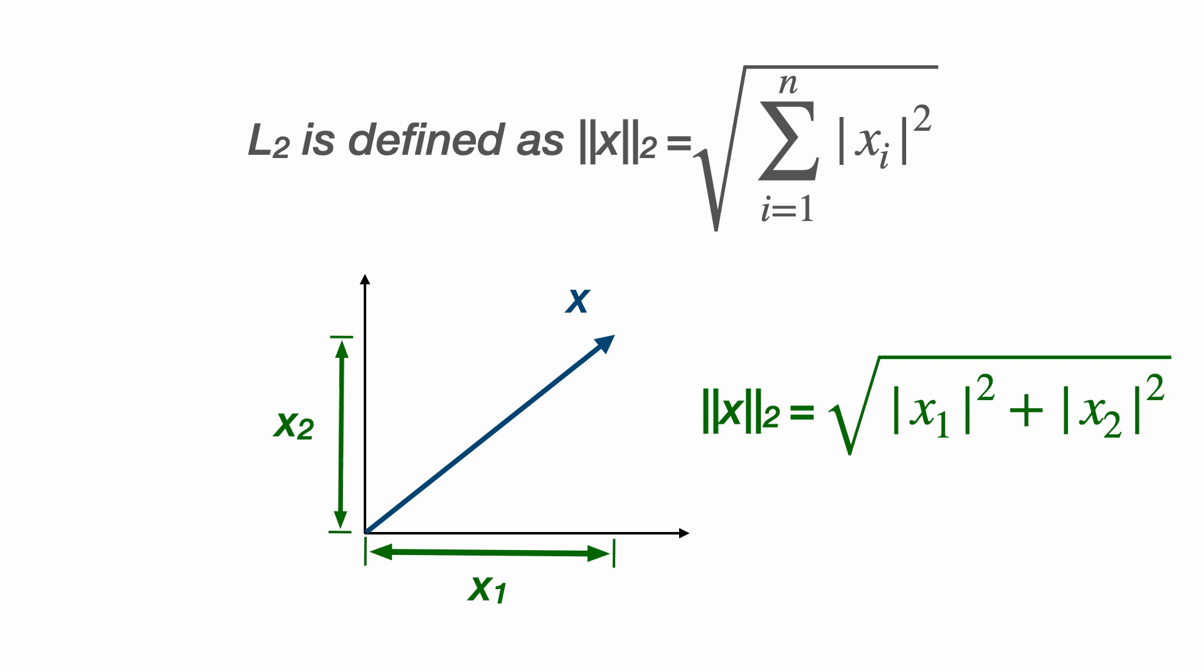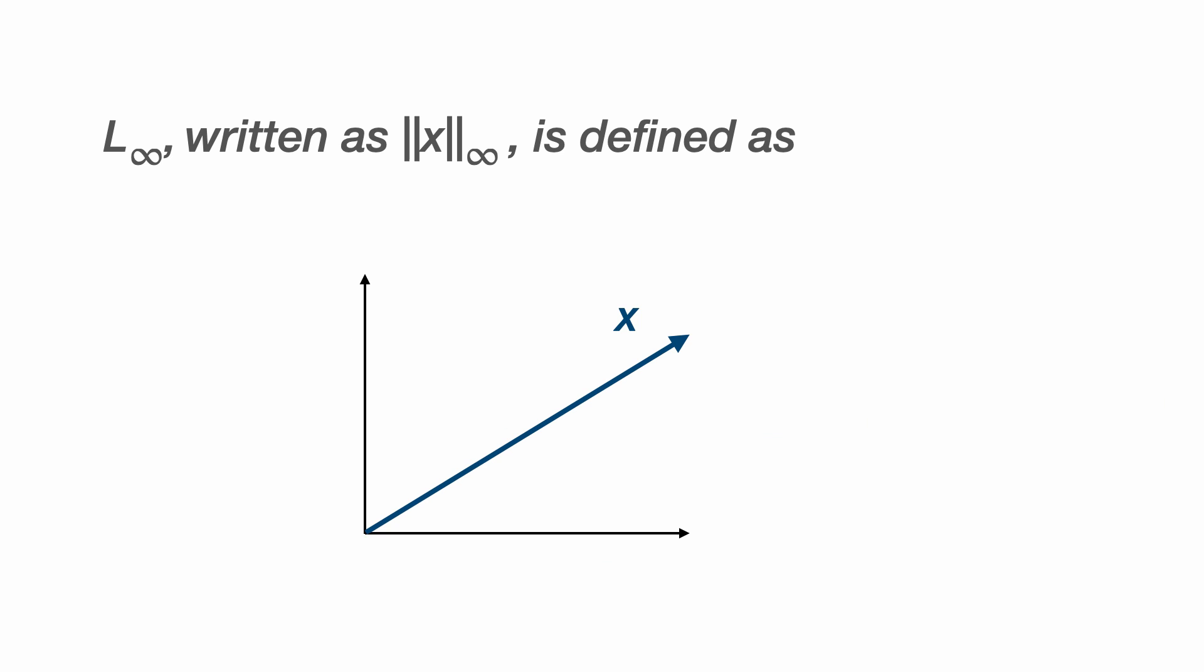A special example called the L infinity norm is the absolute value of the largest component of the vector, written as the max over all components of the absolute value of the components.